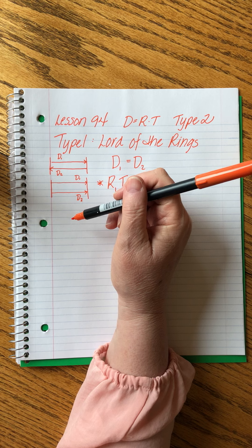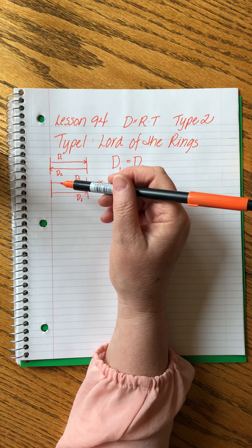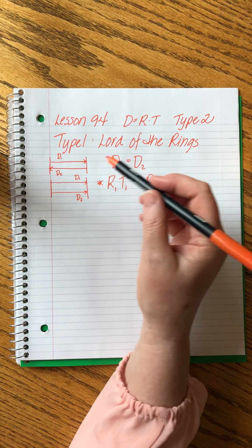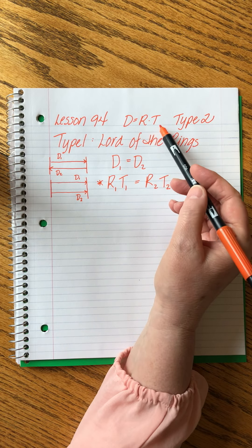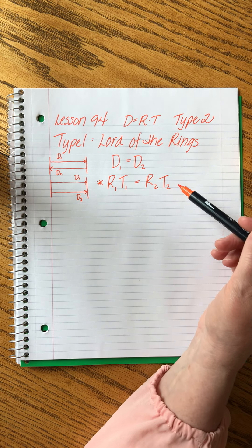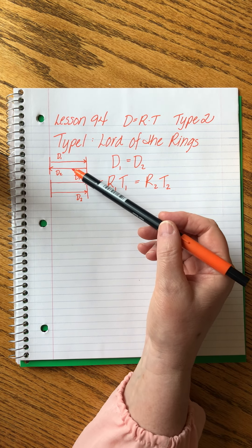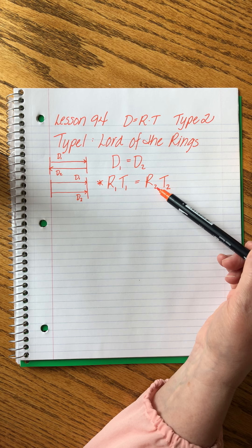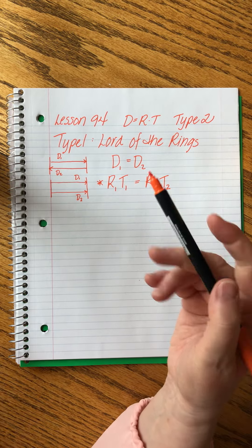This is what we call our base equation because John is going to give us information about the rates and the times so we'll plug it into this. We use the pictures to help us draw what's happening in the problem. Then we write a distance equation based on the picture. Then we take this and blow it up into rates and times. This is the Lord of the Rings style.